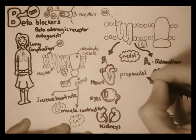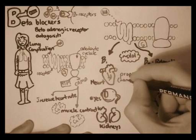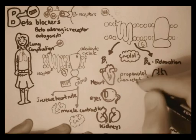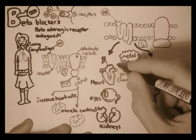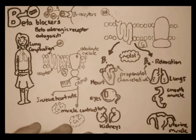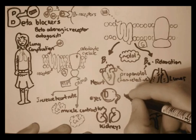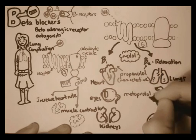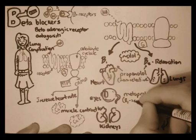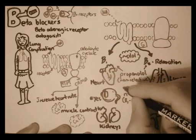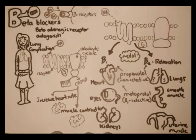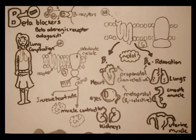Propranolol is a non-selective drug, meaning it doesn't discriminate which beta receptor it binds to — it can bind to beta type 1, beta type 2, or beta type 3. On the other hand, metoprolol is selective for beta type 1 receptors, meaning it targets beta type 1 receptors such as those situated mostly in the heart and kidneys, which causes a decrease in blood pressure.